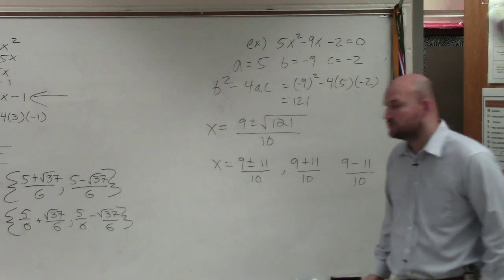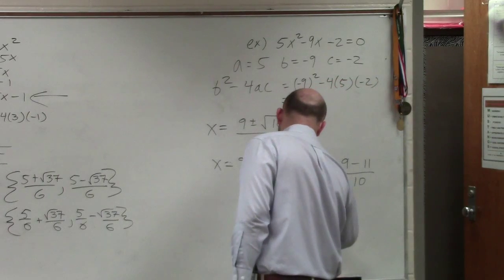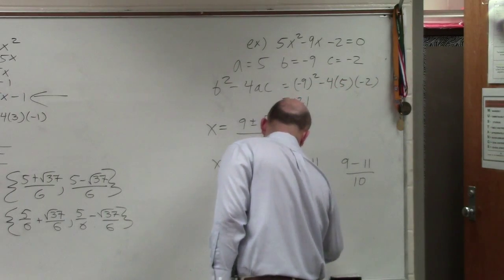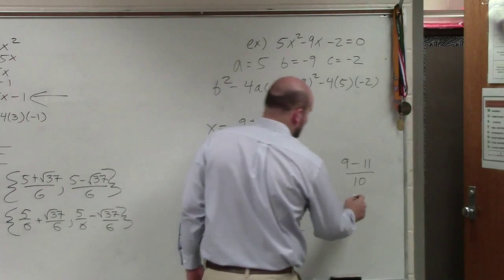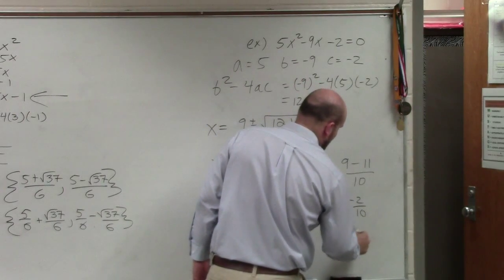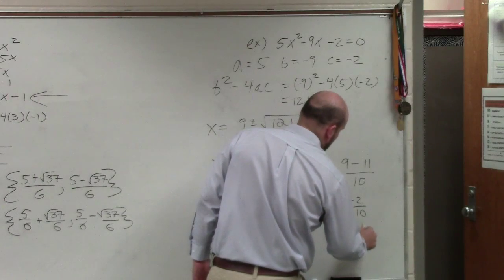So let's do this. 9 plus 11 is 20. 20 over 10 is 2. 9 minus 11 is negative 2 over 10, which is negative 1 fifth.